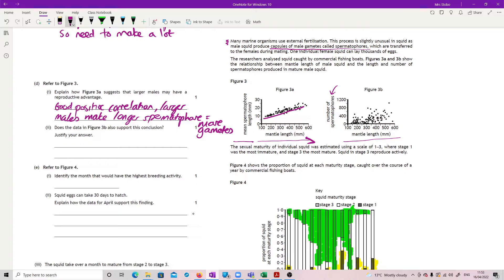Does the figure in 3b also support this conclusion? And that's not quite so good. Because in this one, you have your mantle length doing exactly the same thing. The number of spermatophores doesn't look quite so clear. I think there is a correlation, that's the trend. I think there's an upward trend.